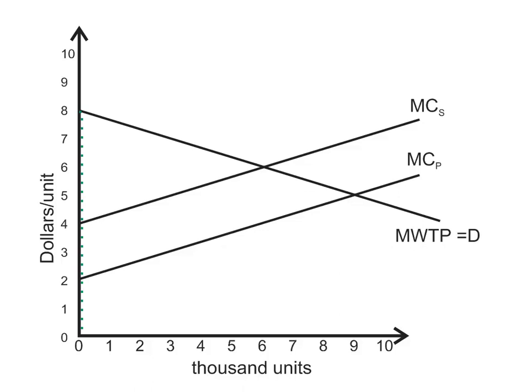The firm says, hey, if I could produce 1,000 units, I could make a lot of money. I mean, look at all that surplus that I could make if I could produce 1,000 units. The price would be really high. My cost would be pretty low. I could make some money.